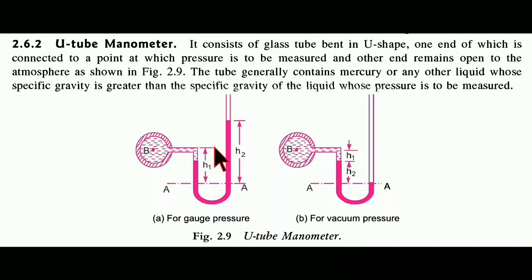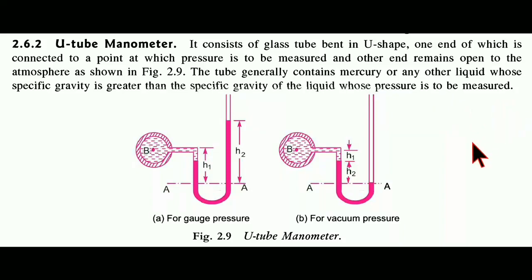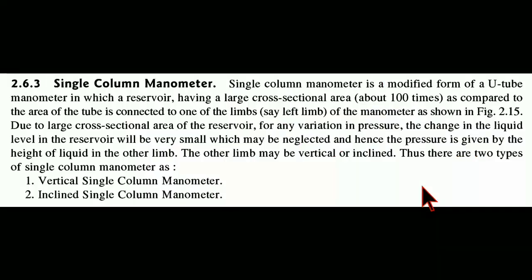The difference between the two is the position of S2 — here S2 is in one position, and there S2 is in another. The U-tube manometer consists of a glass tube bent in a U-shape; one end is connected to the point at which pressure is to be measured, and the other end remains open to the atmosphere. The tube generally contains mercury or any other liquid whose specific gravity is greater than the specific gravity of the liquid whose pressure is to be measured.